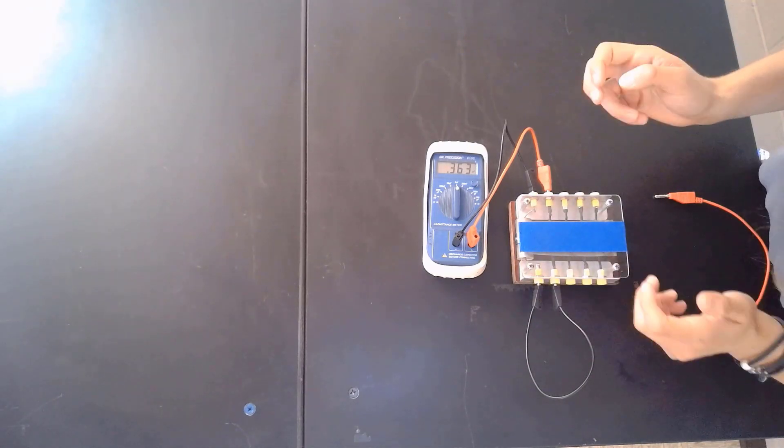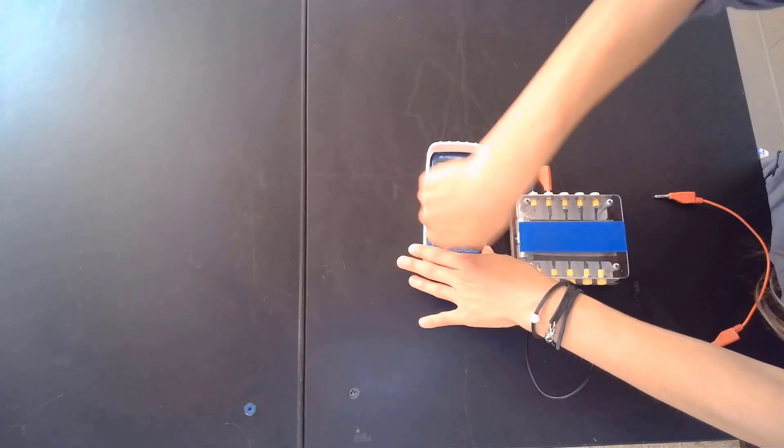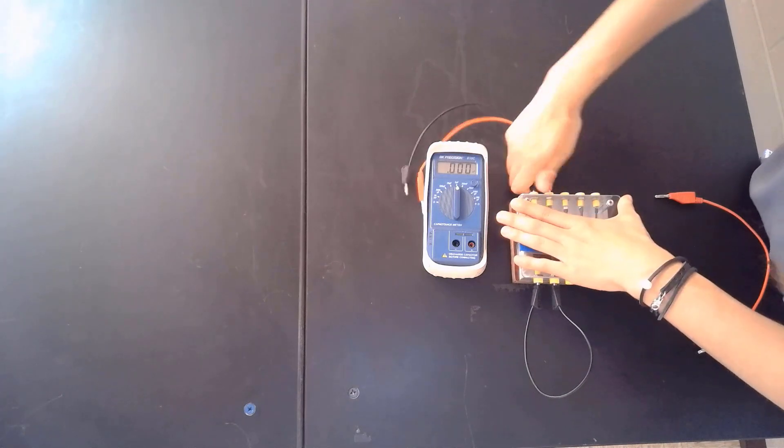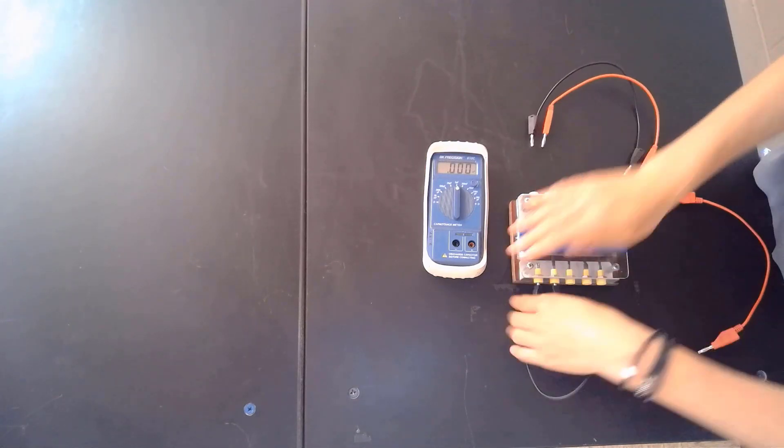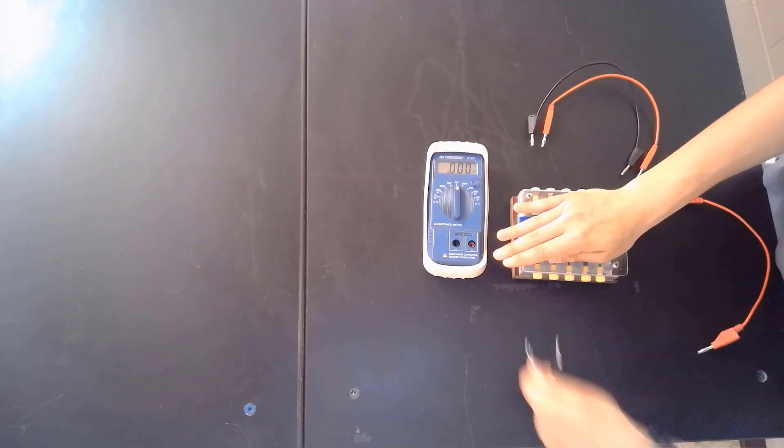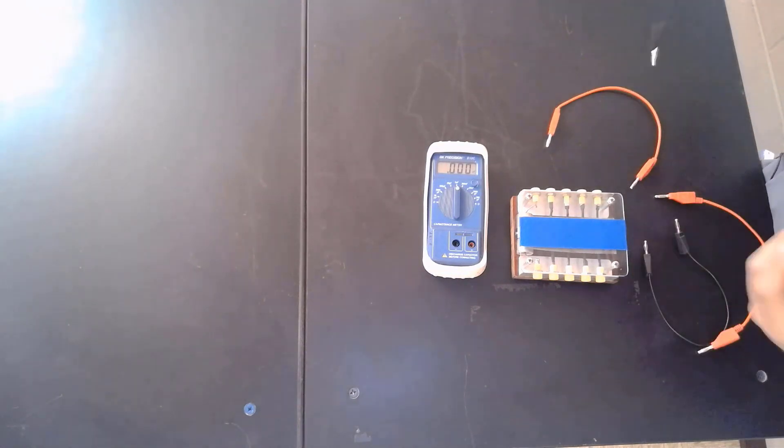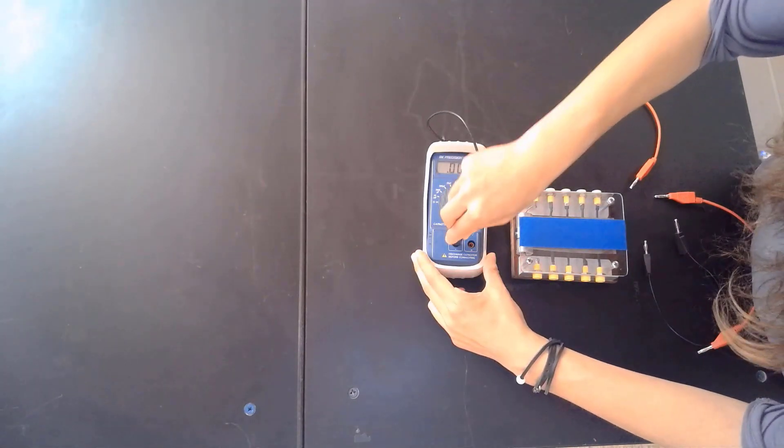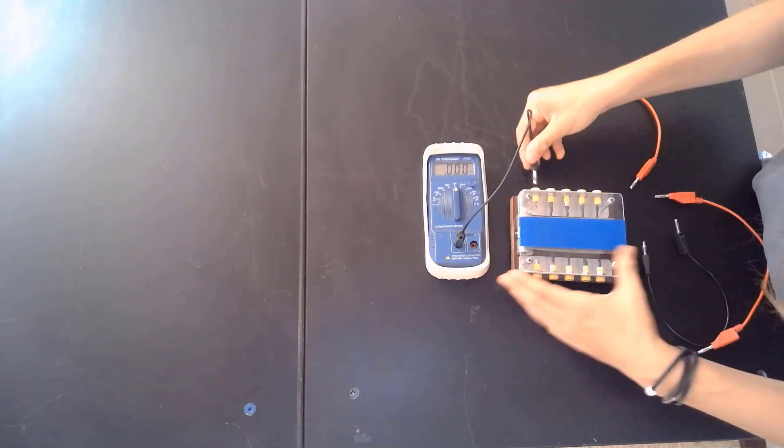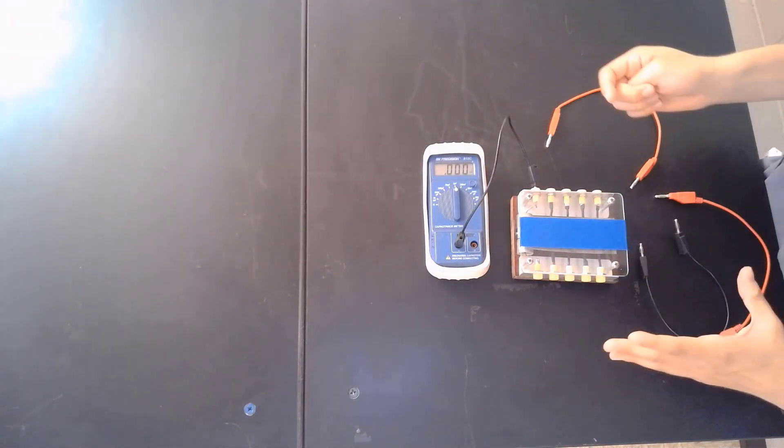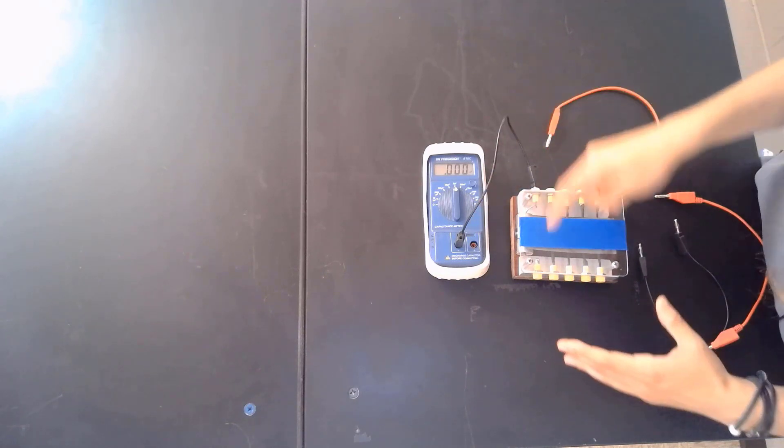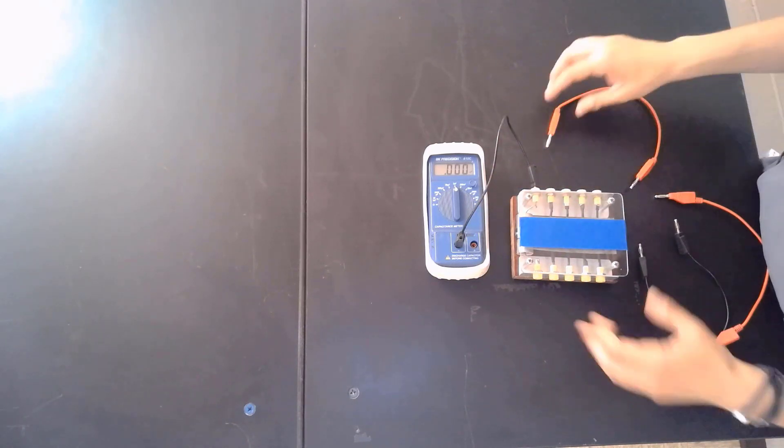Now I'll hook them up in parallel. So I'll start over, take everything out. So parallel, there's going to be a couple junctions. The first junction will be right here. So you want to give the current the option to go either through C1 or through C2.